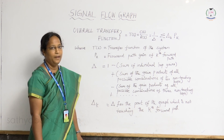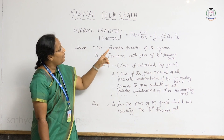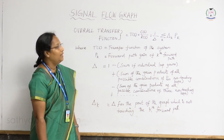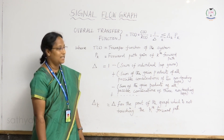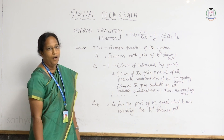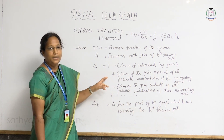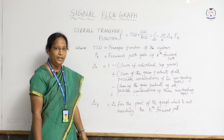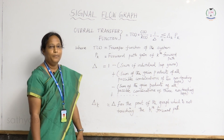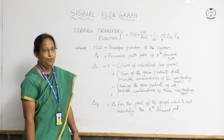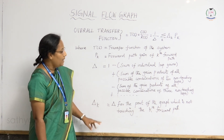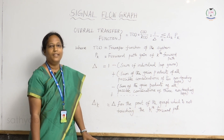Signal flow graph is a pictorial representation of the system whose overall transfer gain is found by using Mason's gain formula. According to Mason's gain formula, the overall transfer function T(S) = (1/Δ) × Σk Δk Pk, where T(S) is the transfer function of the system, Pk equals forward path gain of the kth forward path, Δ equals 1 minus sum of the individual loop gains plus sum of the gain product of all possible combinations of two non-touching loops minus sum of the gain product of all possible combinations of three non-touching loops and so on. And Δk equals Δ for the part of the graph which is not on the kth forward path.